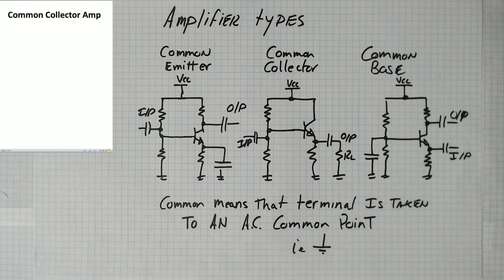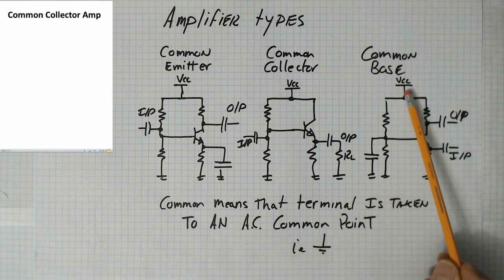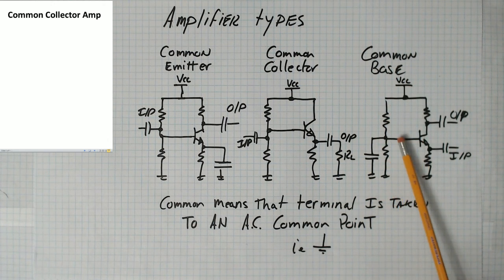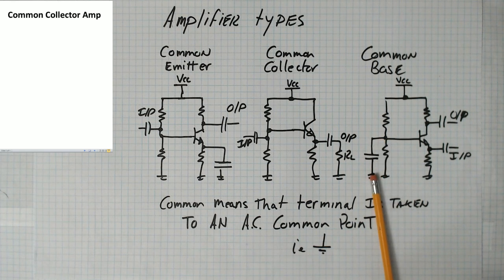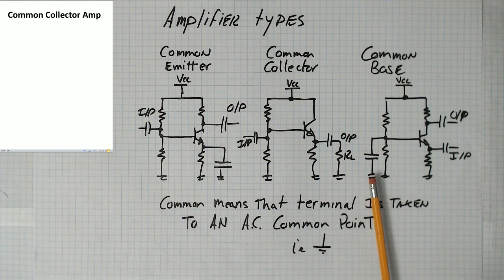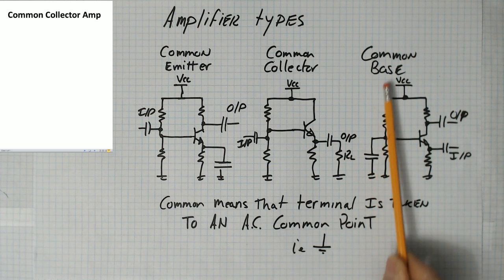The last one, and we probably won't do much with this circuit, is called the common base circuit. So you set up the DC bias point with a couple of resistors that create a voltage divider. And that gets the DC current going. And then you ground the base through a capacitor to ground. So this is an AC ground point. So the base is grounded to an AC common point, hence common base.